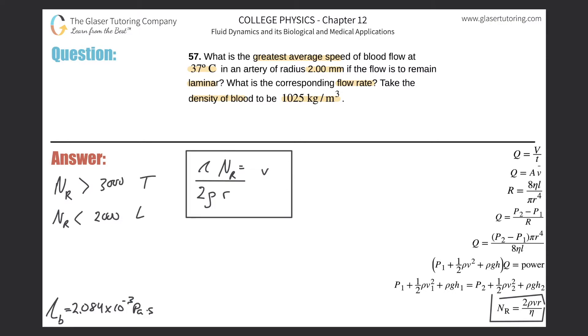Here's the equation: v equals the viscosity—2.084 times 10 to the minus 3—times the Reynolds number, 2000 (the upper limit of laminar flow), divided by 2 times the density of 1025 times the radius. The radius is 0.002 meters (converting millimeters to meters by dividing by 1000).